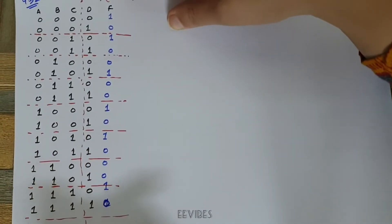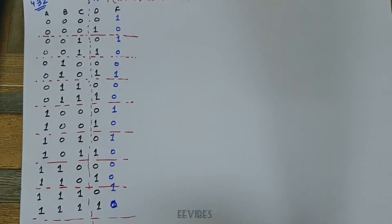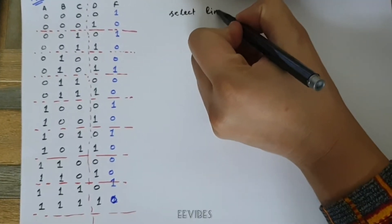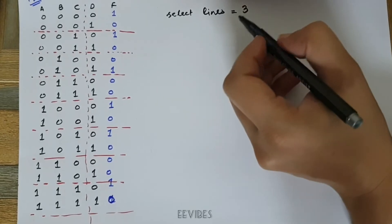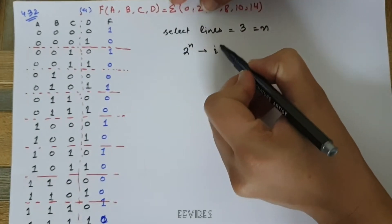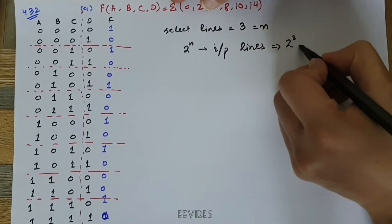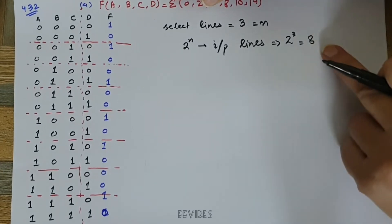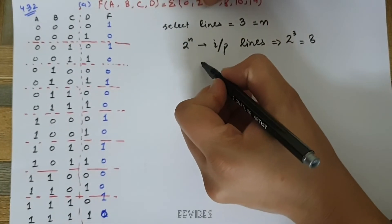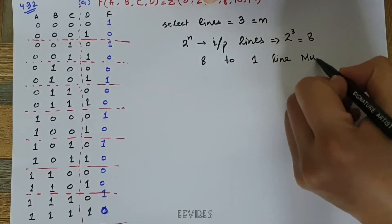Once you have performed this partitioning, decide how many select lines are needed. The remaining variables A, B, C will act as select lines of the multiplexer. Since there are three variables, select lines equal three. For n select lines you have 2 raised to power n input lines, so 2³ = 8 input lines. We will use an 8-to-1 line multiplexer.